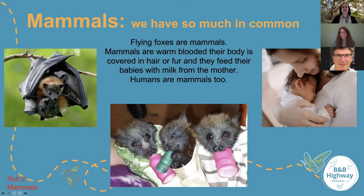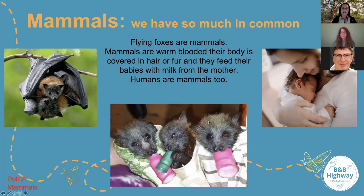There's one question here and the question is: which of the following animals are indeed mammals? Nicole's given us a big clue already — we do know the flying fox is a mammal. But what about a human, a lion, a dog? Or is the answer actually all of the above? Four out of five of you got that right — well done. All of those animals are indeed mammals. Flying foxes, humans, lions, dogs — all of the above are mammals.